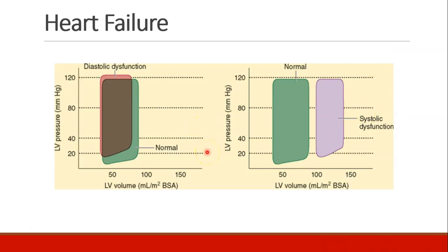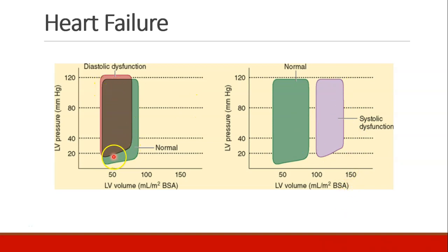Volume-pressure curves show the difference between systolic and diastolic dysfunction. In a patient with systolic dysfunction, volumes are overall much higher — even at end-systole, there is much more volume remaining in the ventricle compared to normal, so this ventricle is chronically overloaded and the ejection fraction is lower. With diastolic dysfunction, the heart cannot be filled as fully as before because of the inability to relax and there are slightly increased pressures compared to normal.